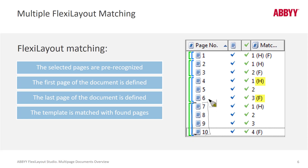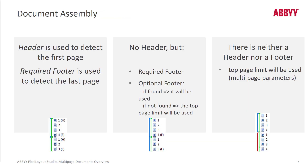By assembling documents to a reference assembly, when you match the document, a green bar will show up where the header matches the reference assembly because it was found on page one, and the footer matches the blue reference assembly because the footer was only found on the last page. This speeds up debugging of multi-page documents in FlexiLayout Studio.